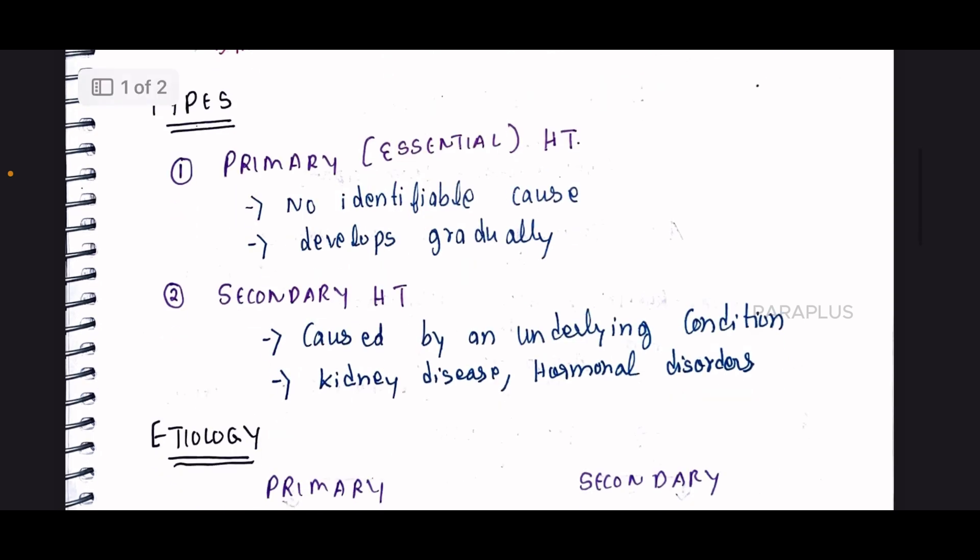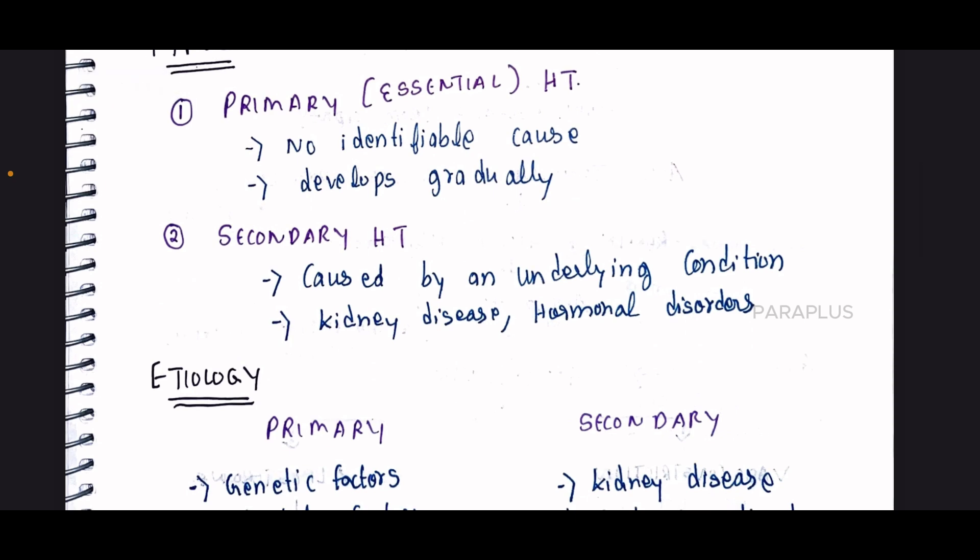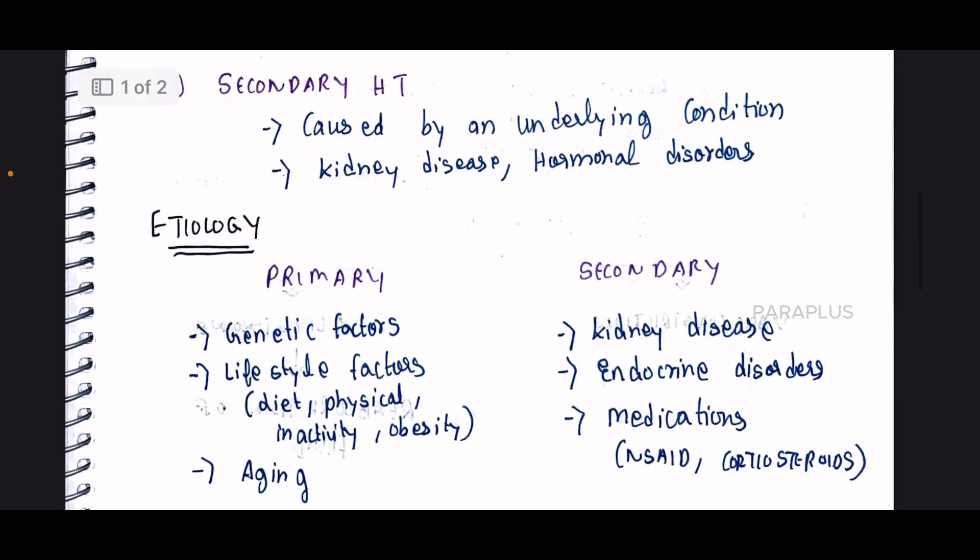Secondary hypertension is a condition caused by an underlying condition. For example, if there is kidney disease and there is no proper function, the urine output is affected. The kidney's most important job involves fluid balance, and if there is no function, there can be fluid retention. Similarly, if there is a hormone disorder, it can also cause hypertension.